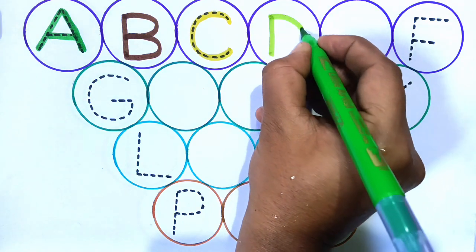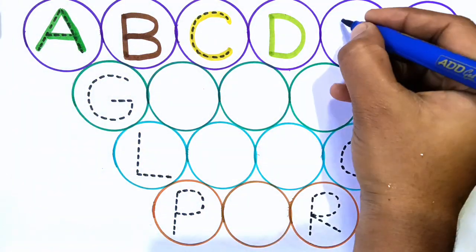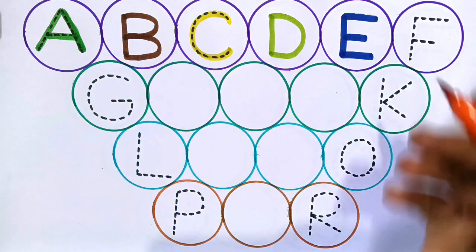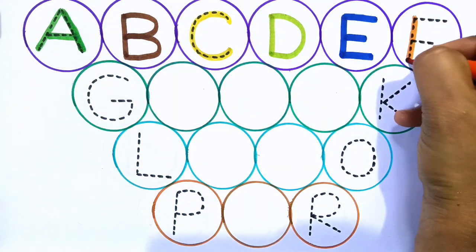D. D for doll. E. E for eel. Next F. F for fish.